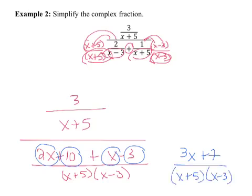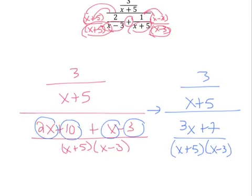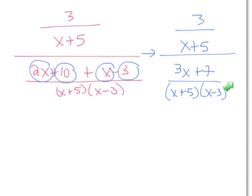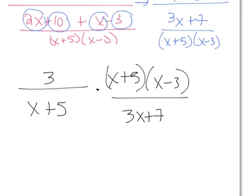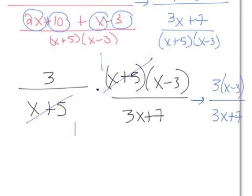It makes it easier to simplify first. Now we take the numerator fraction and multiply it by the reciprocal of the denominator fraction, because that's the definition of division — multiplication by the reciprocal. The entire binomial x plus 5 times x minus 3 cancels out. We can leave our answer as 3 times the quantity x minus 3, all over 3x plus 7. Or distributing the 3, that's 3x minus 9 over 3x plus 7.